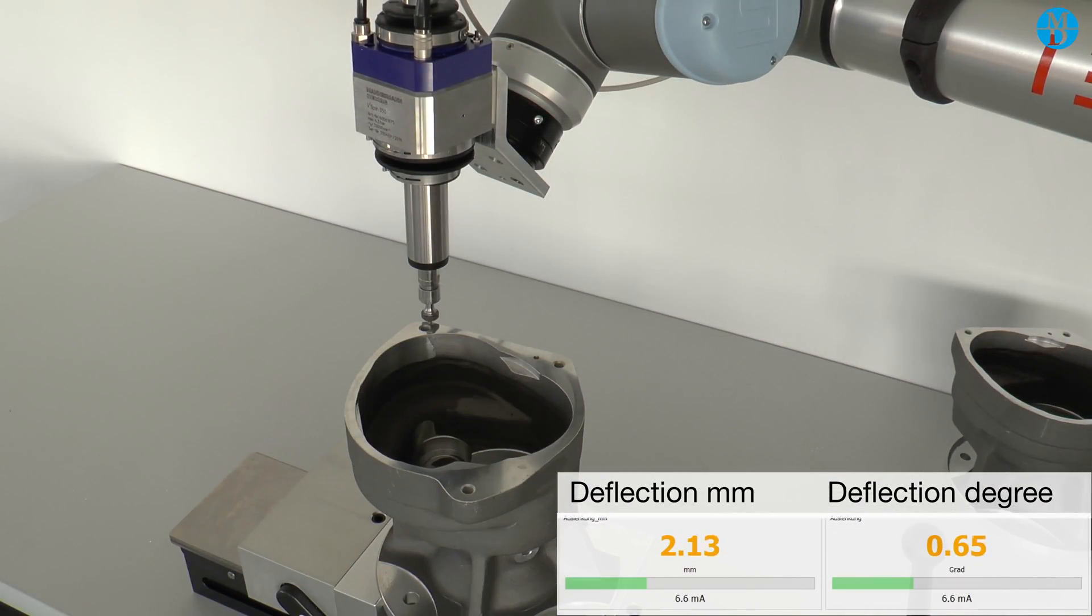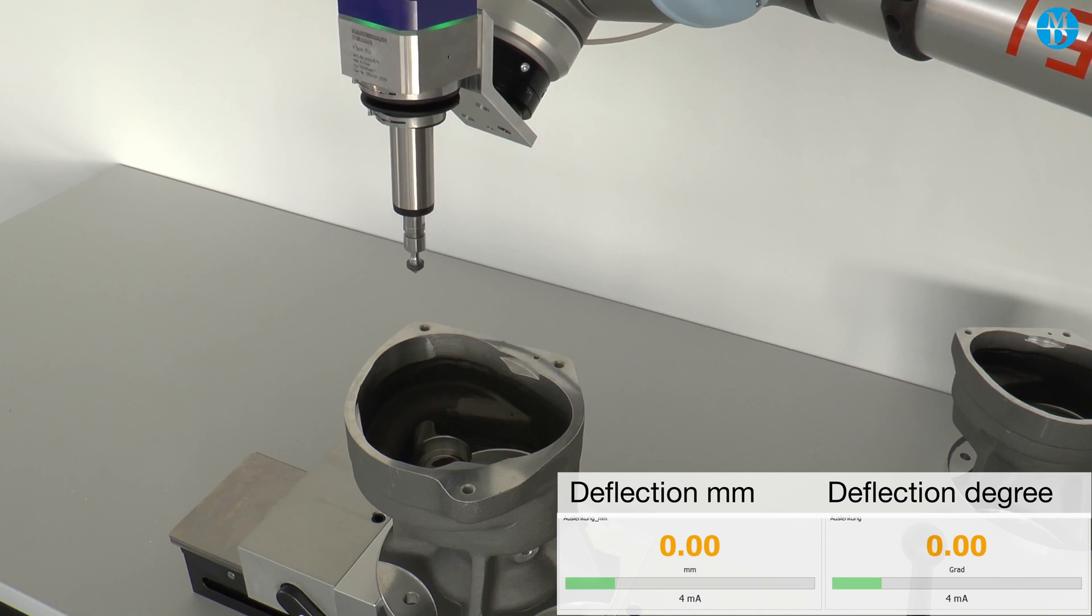So with 0.64 degrees, we are close enough and can go again to collect more data about the deburring of this part. Now we will deburr this second part.